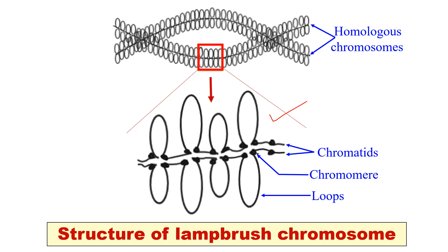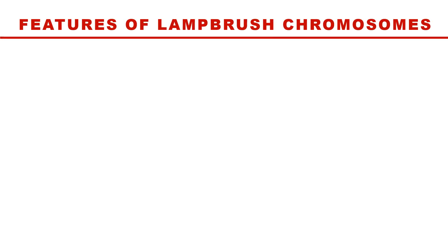These loops are enriched with RNA polymerase, proteins, and transcription factors. Lampbrush chromosomes are a mixture of DNA, RNA, and proteins.